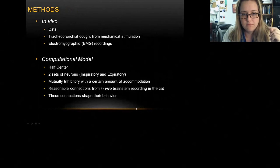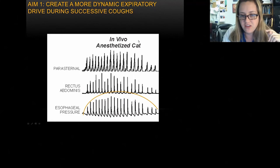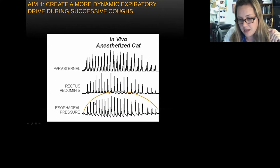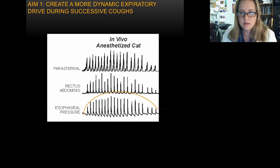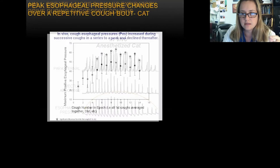Cough is actually not that way when you look at it in vivo. With repetitive coughing, you see a bell-shaped curve where the first cough in the sequence has the lowest excitability, then up to about the eighth or ninth cough you have higher excitability, and then it falls off over time. The first aim of this project was to create a more dynamic expiratory drive, especially during successive coughs.